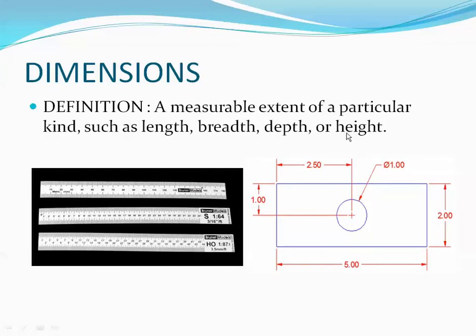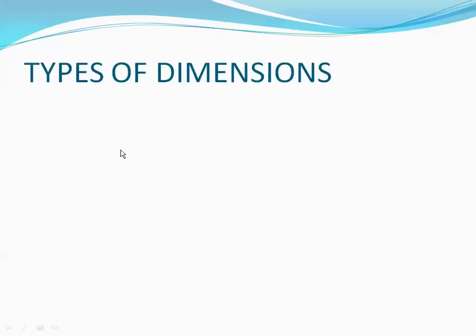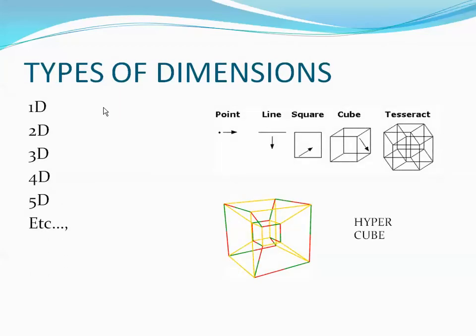Next, let's go to the types of dimensions. We have one dimension, two dimension, three, four, five, and so on. A point comes under zero dimension because you can't specify its length. A line comes under the first dimension because we can measure only the length. A square comes under two dimensions — length and breadth, x and y directions. A cube is three-dimensional — x, y, and z.